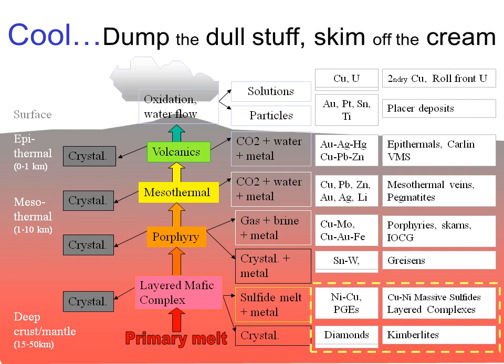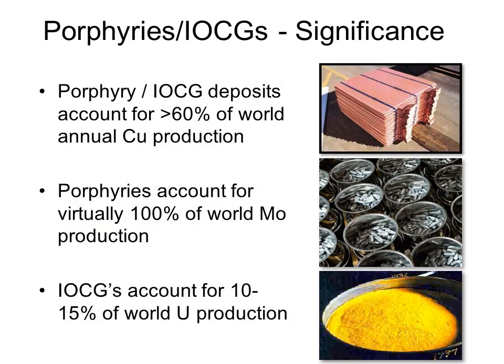In the second talk I spoke about deposits associated with mafic layered complexes and kimberlites. In this talk I'll focus on porphyry and IOCG deposits, which develop at a slightly shallower depth — generally in the range of 1 to 5 kilometers. Porphyry deposits and IOCGs are the world's primary source of copper, accounting for more than 60% of global copper production, plus 100% of molybdenum, 10–15% of uranium, and a significant proportion of gold production.